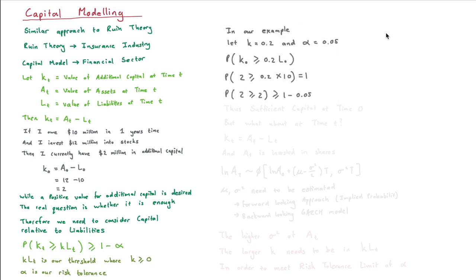Let's look at our example. Let's say the regulator or business says we need to have this comfort ratio of 0.2, and our risk appetite or risk tolerance is 0.05. Do we have more than 20 percent of the value of our liabilities stored up in additional capital? We can see that 2 million is greater than or equal to 20 percent of 10 million, so that inequality holds, which means we have sufficient capital at time zero.